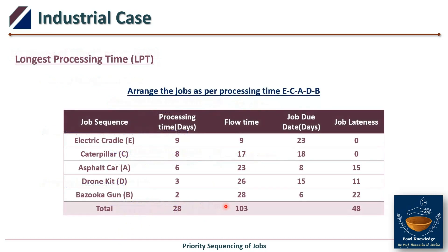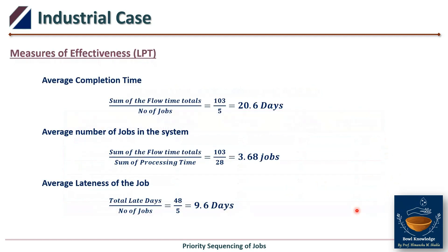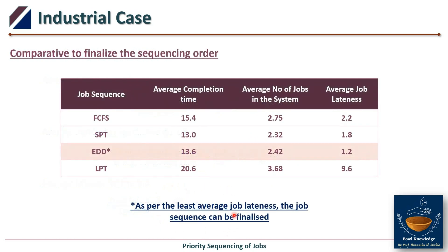The last sequence is Longest Processing Time (LPT). Jobs are arranged from maximum to minimum processing time — descending order — giving sequence E, C, A, D, B. Flow time total = 103, processing total = 28, lateness total = 48. Measures of effectiveness: average completion time = 103÷5 = 20.6 days; average jobs in system = 103÷28 = 3.68; average lateness = 48÷5 = 9.6 days.